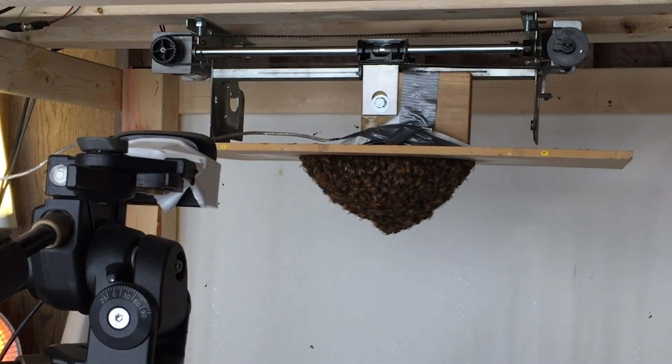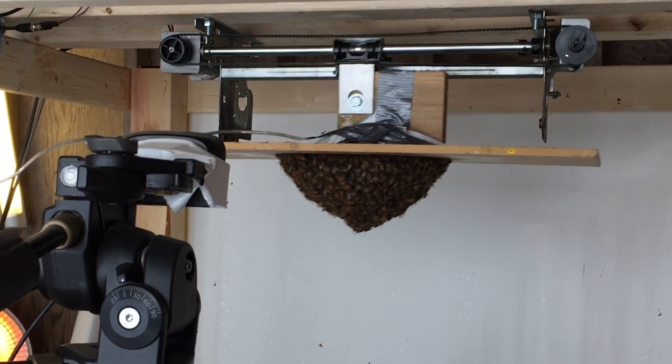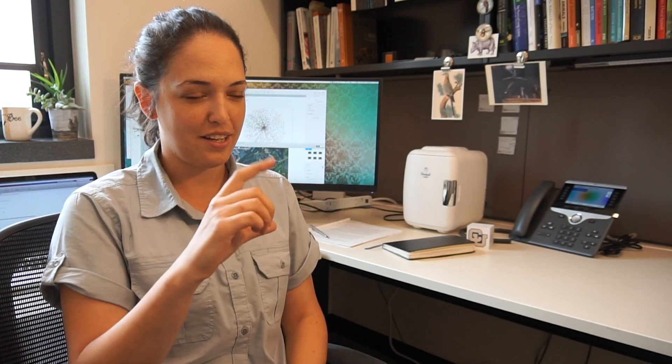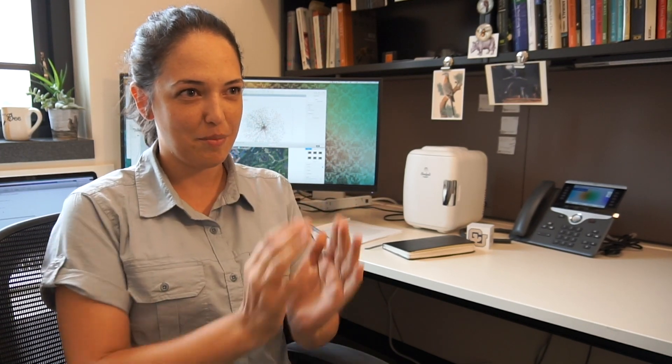And what we found out is that when we shake the bees, the bees inside the swarm start moving around and they collectively change the shape of the swarm. So they start with a cone-like structure with a certain height and base area and they basically spread out like this, and when we stop the perturbation they go back to their steady state configuration.